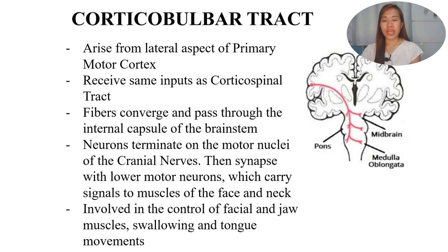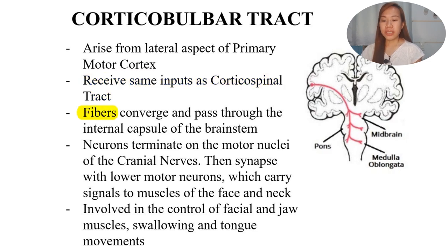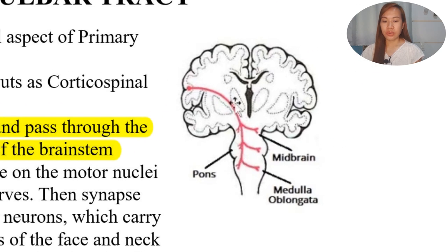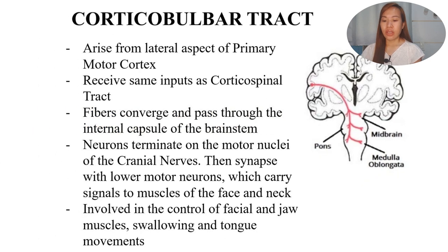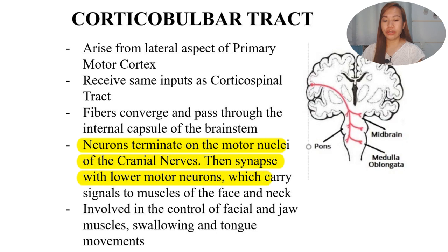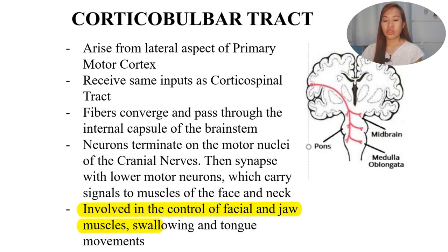The corticobulbar tract - the signals are still from the cortex, but this tract does not end in the spinal cord. It arises from the lateral aspect of the primary cortex and receives the same inputs as the corticospinal tract. Rather, the fibers converge and pass through the internal capsule of the brainstem. Neurons terminate on the motor nuclei of the cranial nerves - that's why it's called corticobulbar. When we say bulbar, they do not end on the spinal cord; they end on the motor nuclei of the cranial nerves. They synapse with lower motor neurons, which carry signals to muscles of the face and neck. The corticobulbar tract controls movements of the face and neck, and is involved in the control of facial and jaw muscles, swallowing, and tongue movements.